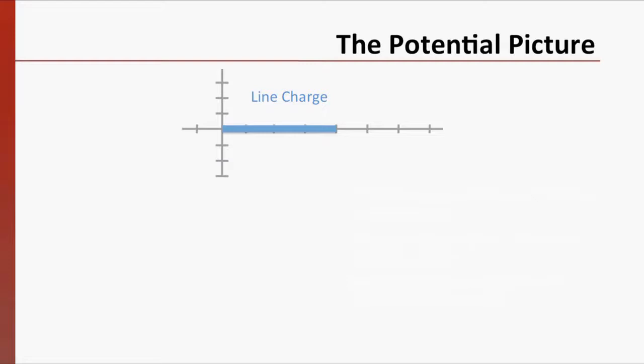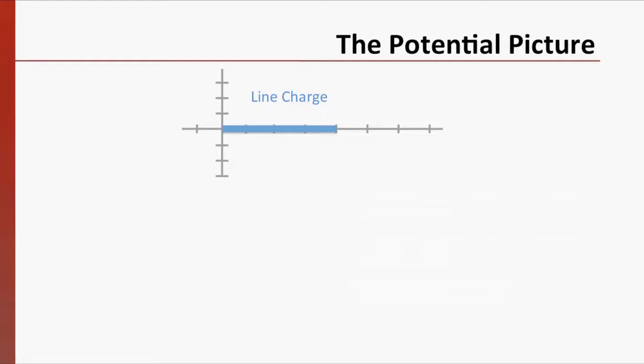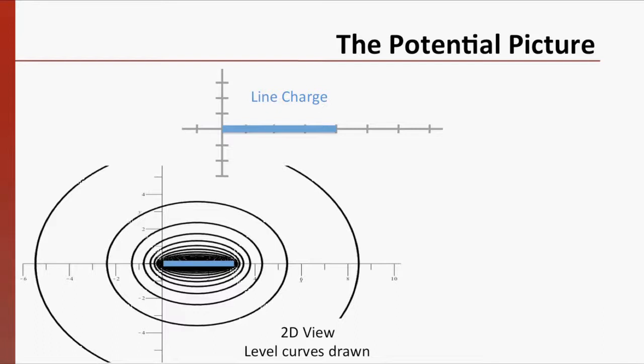Let's look at two ways to envision an electric potential for a positively charged line near the origin. We're going to look at this in two dimensions to make things easier to see. We can draw the level curves for the electric potential function. These are called equipotential lines because the value of the potential is equal at every point on a given line. For instance, we might draw lines every 10 volts.